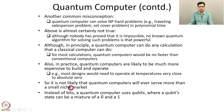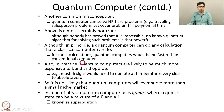As mentioned earlier, instead of bits, a quantum computer uses so-called qubits, where a qubit's state can be a mixture of a 0 and a 1. So with some probability the state is a 1, and with some probability it is a 0. This is known as superposition — a qubit is in the superposition of 0 and 1.